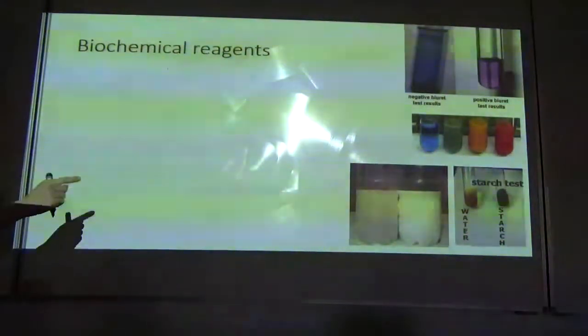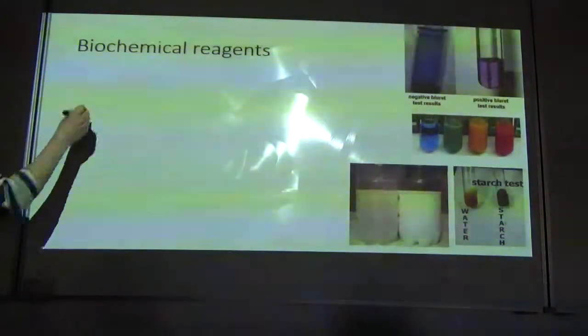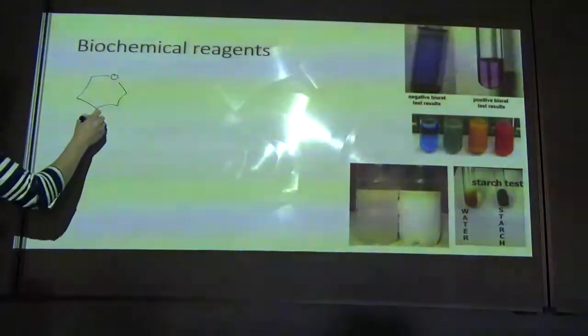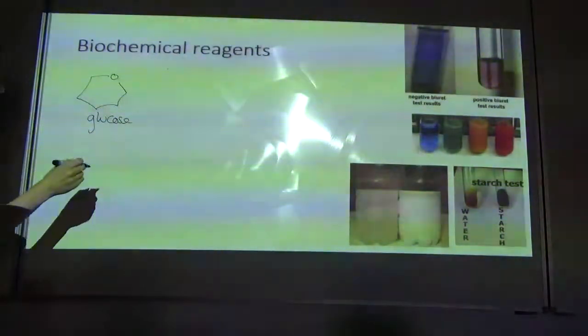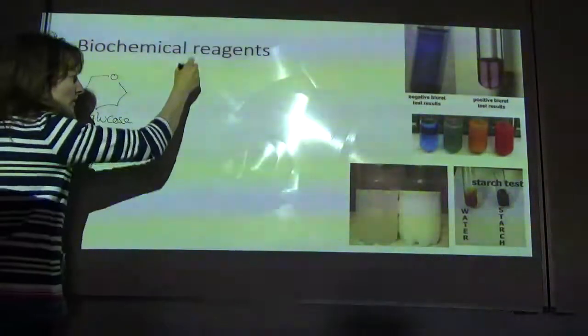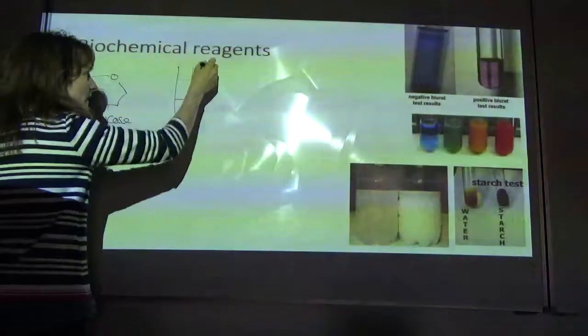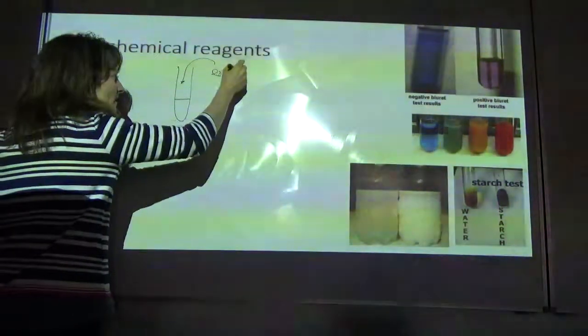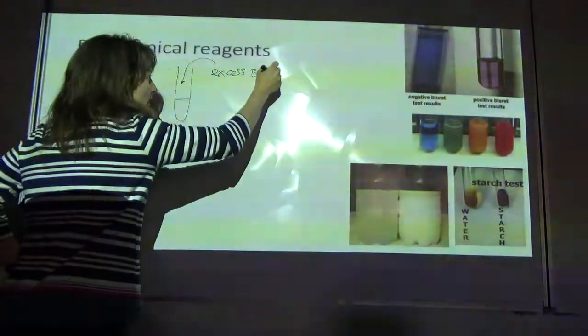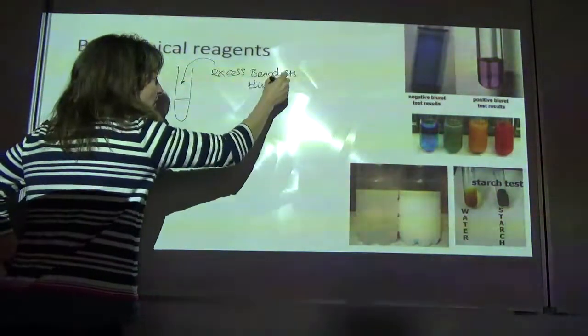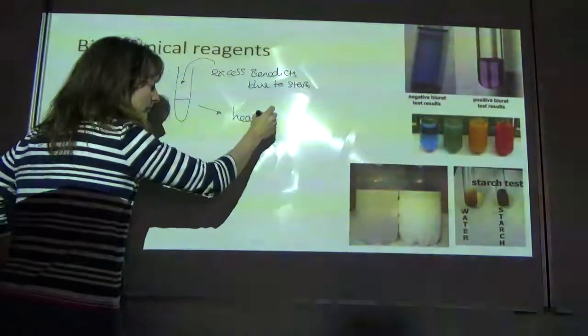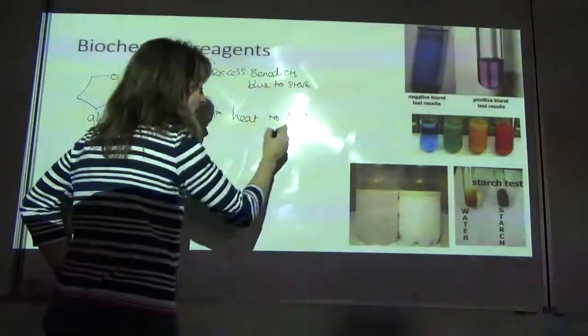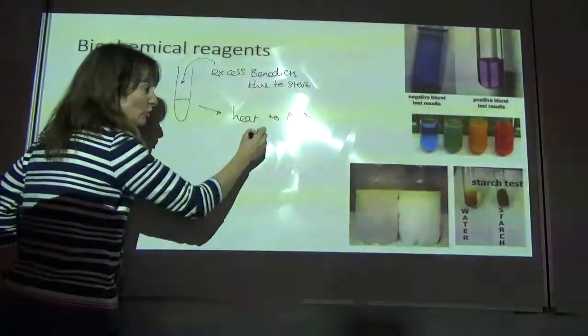But for Benedict's test of a reducing sugar, so reducing sugar is something like glucose. If we want to see if glucose is present in a solution, first of all we take a sample of our solution and we add in excess Benedict's, which is blue, which is blue to start.